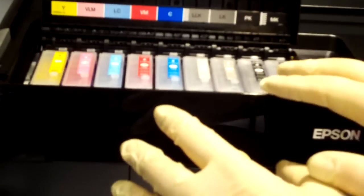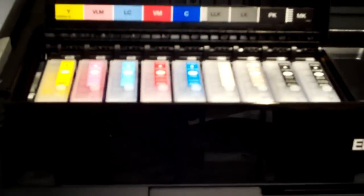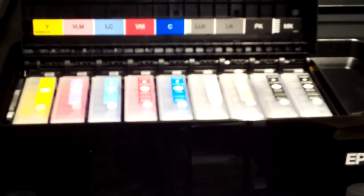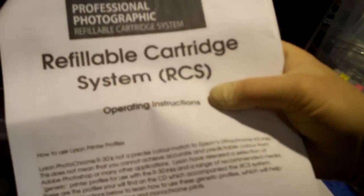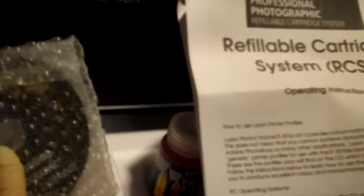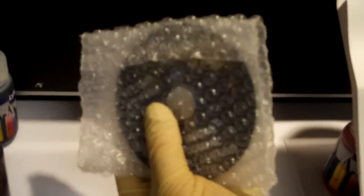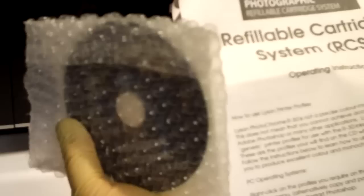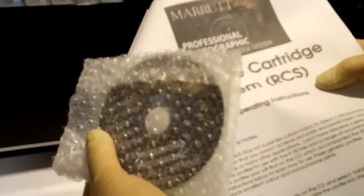Once you've got yourself a perfect nozzle check on all of your channels, you then turn your attention to the printer profiles, and if you turn to the part of the instructions, which is in here, the operating instructions, you simply follow the instructions here, you install your printer profiles as per the disk, and then you will get a perfect colour and monochrome output because of the printer profiles that we provide.